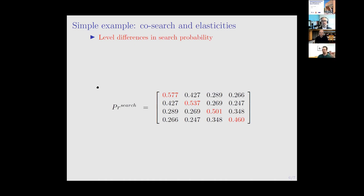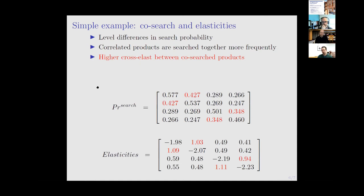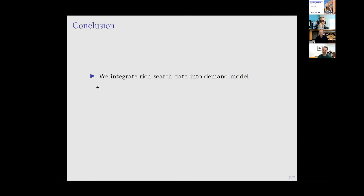Here are the patterns that model generates. The co-search matrix shows on the diagonal the marginal probabilities of each product being searched. The correlation in the gamma-bars translates into correlation of co-search probabilities: A and B are frequently searched together, C and D are frequently searched together. Unsurprisingly, that leads to cross-price elasticities that follow the co-search patterns - products A and B have a higher cross-price elasticity because a prerequisite for substituting is having those products in the same consideration set.